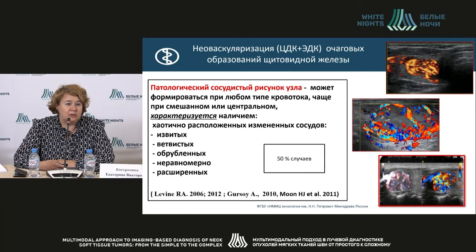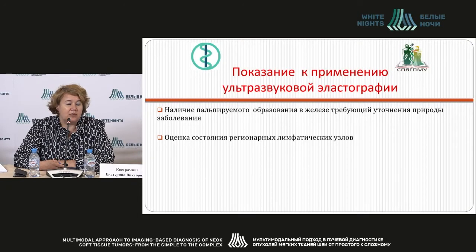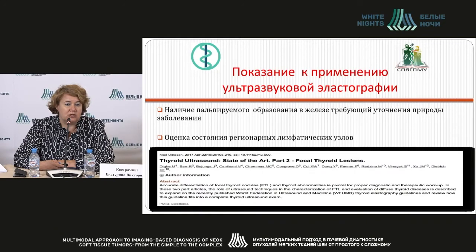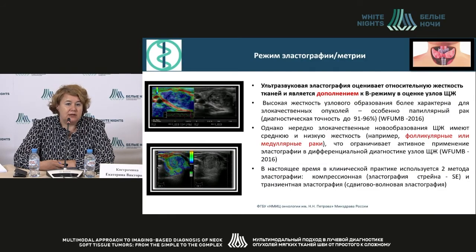As mentioned, the pathological vascular pattern may be seen in any type of blood flow with different kinds of abnormalities, but that is only in 50% of thyroid cancer cases. Elastography is indicated when there is a palpable neoplasm in the gland needing specification, or for assessment of regional lymph nodes. Elastography and elastometry mode is an addition to B-mode and determines the relative rigidity of tissues, especially typical for papillary cancer. The diagnostic precision of this method is 91–96% according to 2016 data.